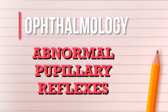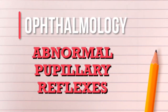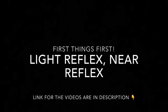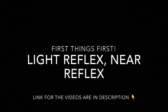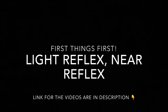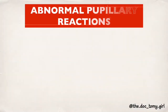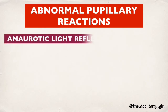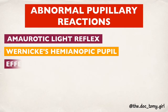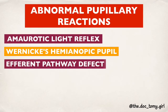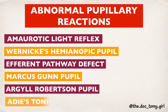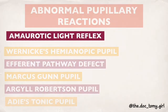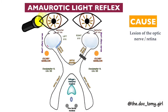This video is about the abnormal pupillary reflexes. Before watching this video, you would have to study and revise the pathways for light reflex and the pathways for near reflex. Links for those videos will be provided in the description below. The abnormal pupillary reactions are: amaurotic light reflex, Wernicke's hemianopic pupil, efferent pathway defect, Marcus Gunn pupil, Argyll Robertson pupil, and the Adie's tonic pupil.